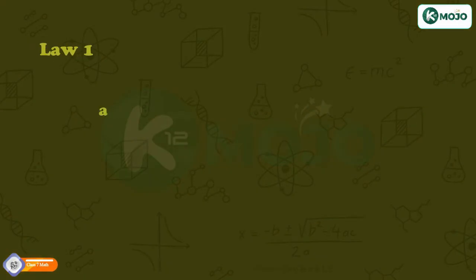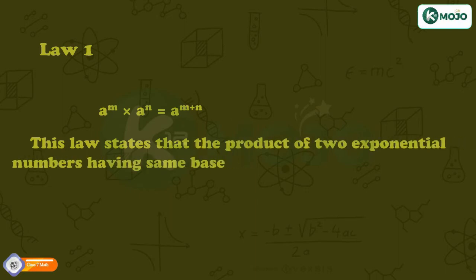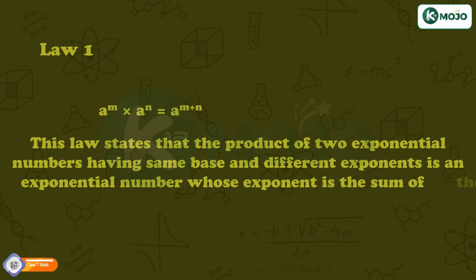Law one: a raised to the power m into a raised to the power n is equal to a raised to the power m plus n. This law states that the product of two exponential numbers having the same base and different exponents is an exponential number whose exponent is the sum of the exponents of both the numbers.